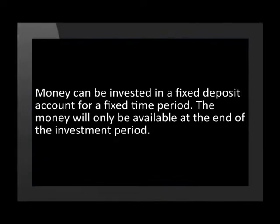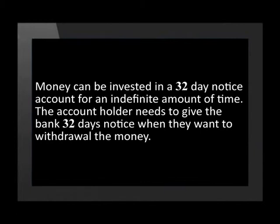The last two accounts we will discuss are a 32-day notice account and a fixed deposit account. Both of these are short-term investment accounts, meaning we should only invest in them for a maximum period of five years. They generally have better interest rates than other accounts offered by banks. The main difference is how an account holder would gain access to their money. Money in a fixed deposit account is locked in for a fixed time period and will only be available at the end of the investment period — for example, 12 months. Money in a 32-day notice account can be invested for an indefinite amount of time, but the account holder needs to give the bank 32 days' notice when they want to withdraw.